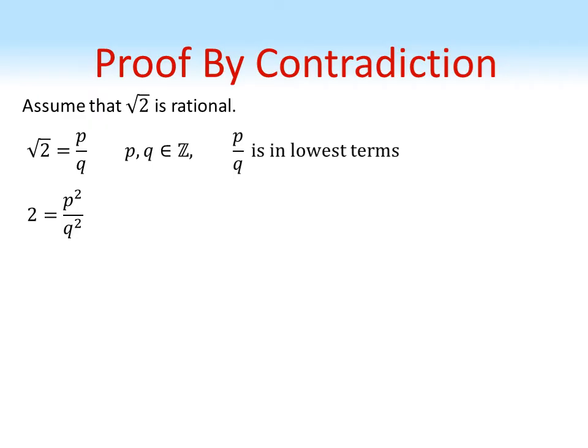Squaring both sides of our equation we get that 2 equals p squared over q squared. Multiplying both sides by q squared gives us 2q squared equals p squared.